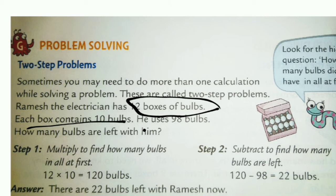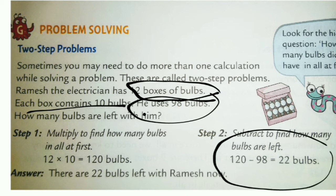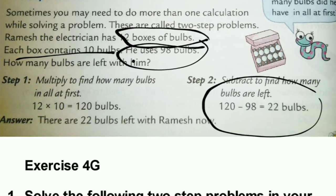He had 12 boxes with 10 bulbs each. So in 12 boxes: 10 times 12 equals 120 bulbs. He used 98 out of 120, so we subtract: 120 minus 98 equals 22. So 22 bulbs are left.